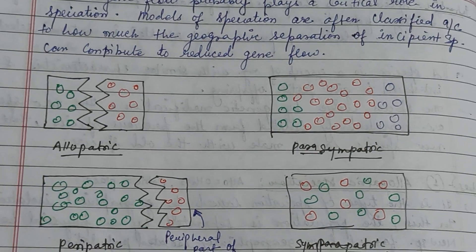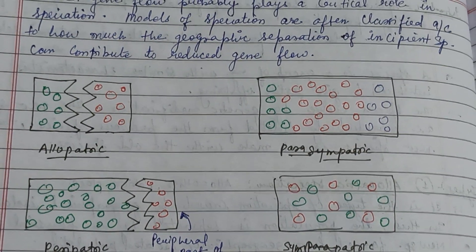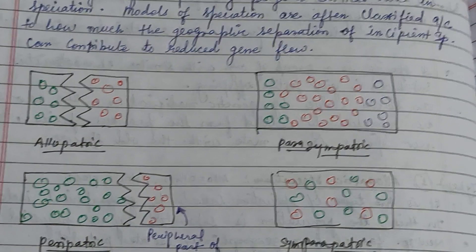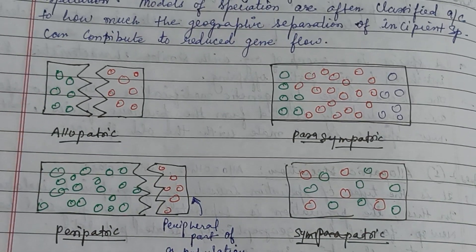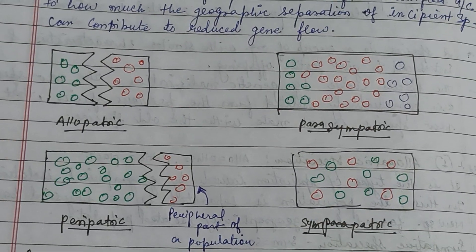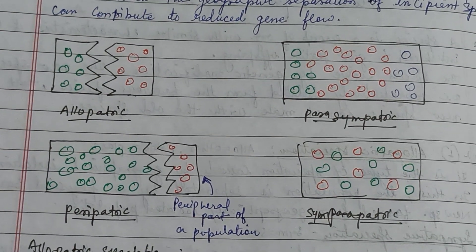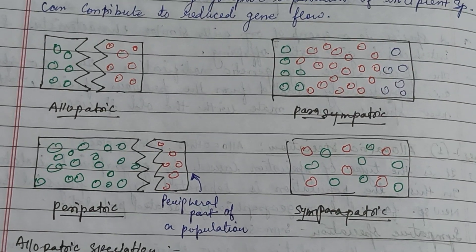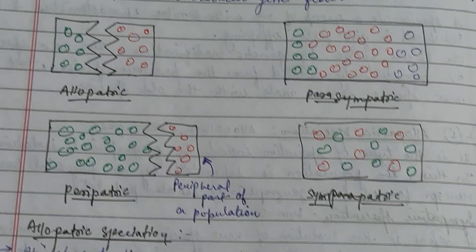In this figure, allopatric speciation occurs due to a geographical barrier, while parapatric speciation occurs beside the population. Peripatric speciation occurs when a peripheral part of a population becomes isolated and forms a new species. Sympatric speciation occurs in the same geographical area, which may be due to reproductive isolation, mutation, or any other cause.